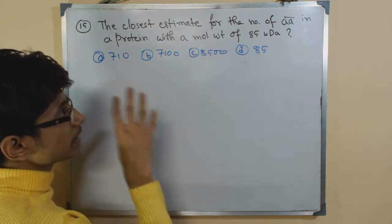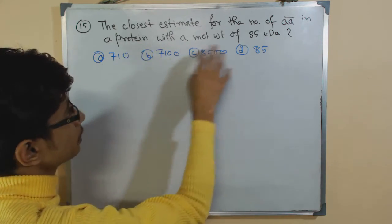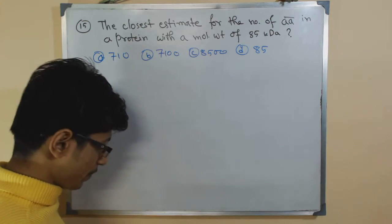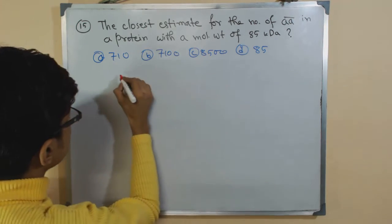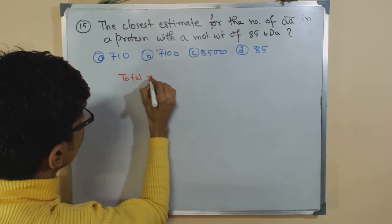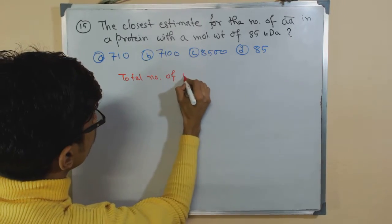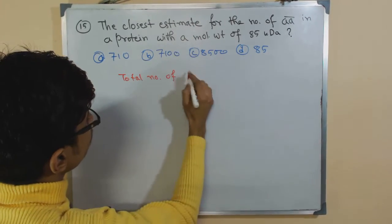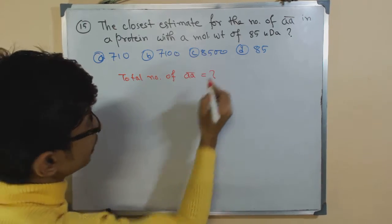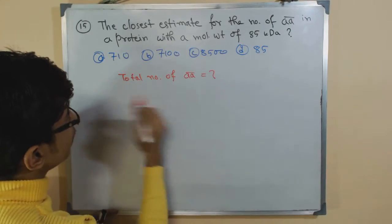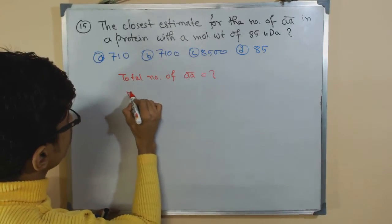The closest estimate of number of amino acids in a protein with a molecular weight of 85 kDa. We need to figure out the total number of amino acids present. What they give us is the molecular weight.